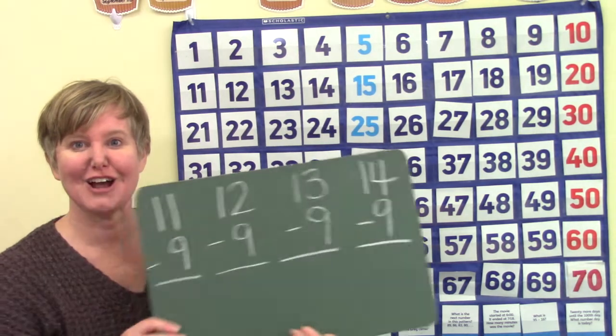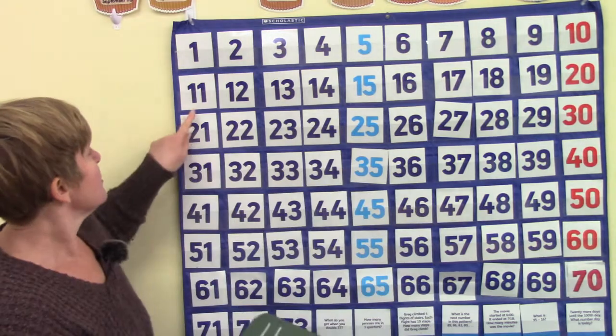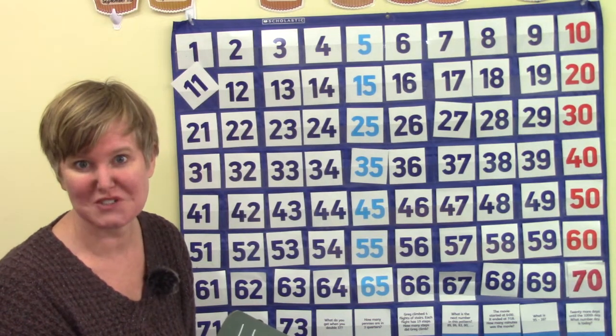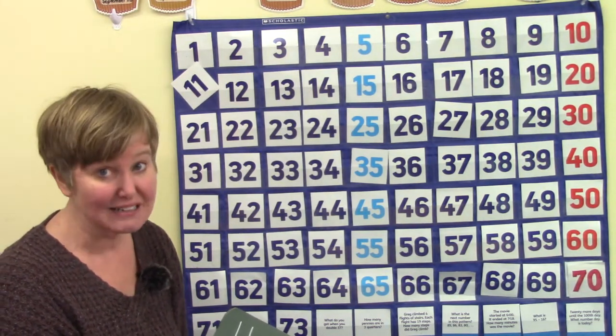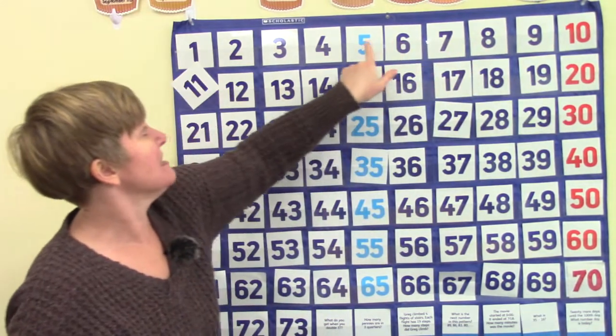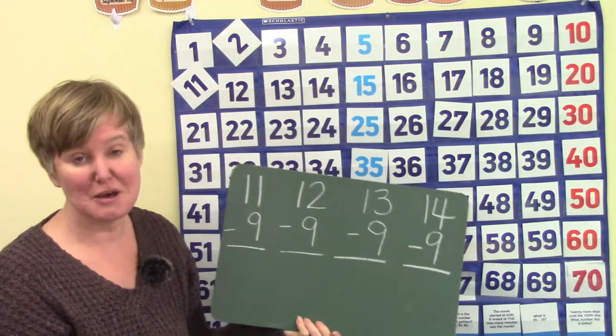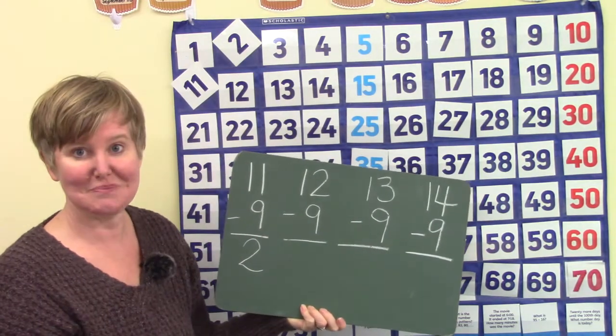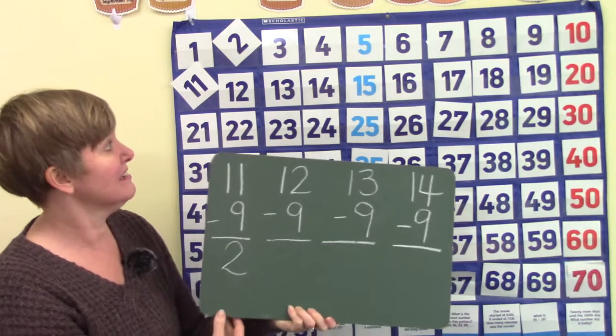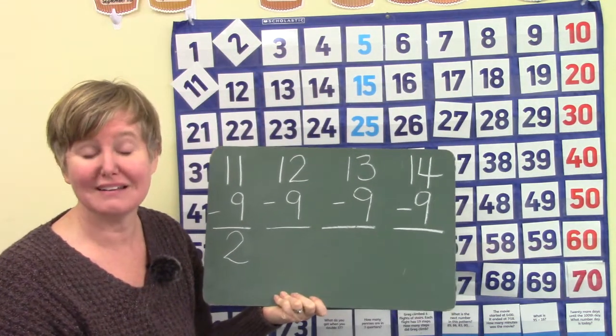Well today we are going to be doing some subtraction facts and the first one that I want to look at is eleven take away nine. So here we have eleven and I am going to just put my little card like that so we remember where we started. And we're going to count back nine. So we're at eleven we're going to count back one two three four five six seven eight nine. Well eleven minus nine is two. We could even count up from nine nine ten eleven.